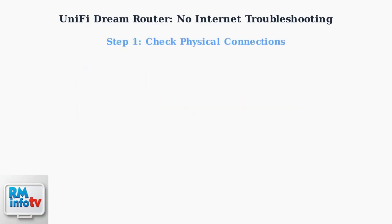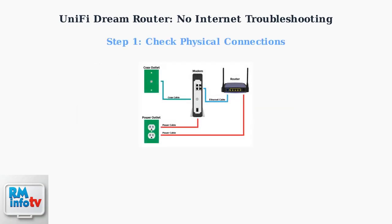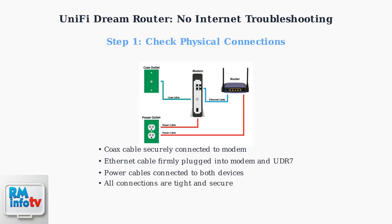Step one is checking all physical connections. Ensure the coax cable is securely connected to your modem, the ethernet cable is firmly plugged into both the modem and UDR7, and all power cables are properly connected. Loose connections are a common cause of internet issues.